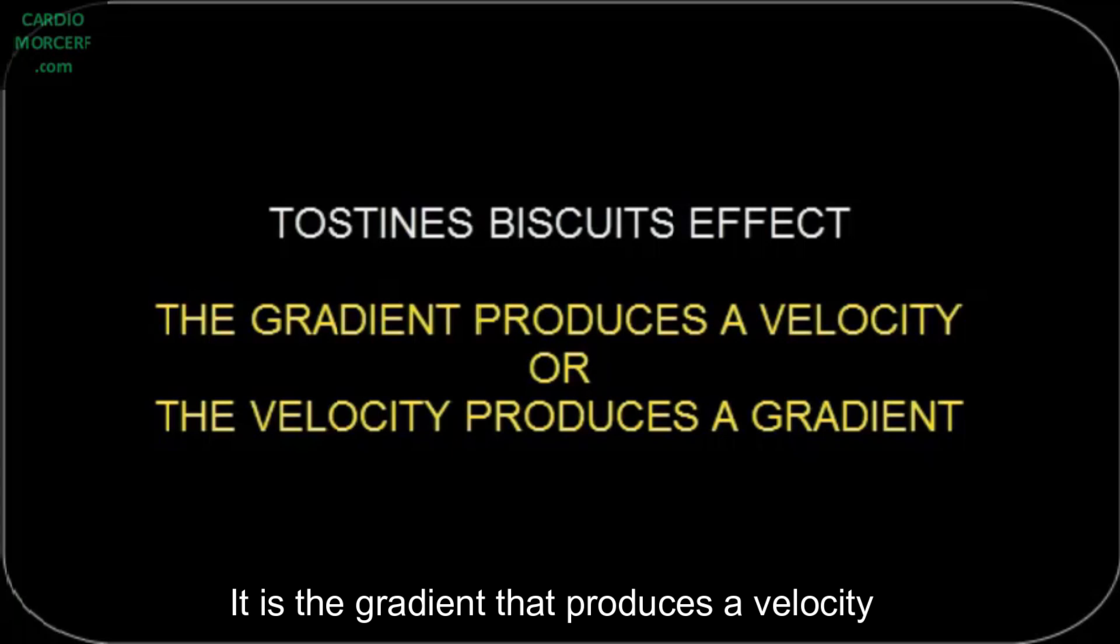In other words, it is the gradient that produces a velocity or is the velocity that produces a gradient. I believe that most of you will say that it is the gradient that produces a certain velocity and not the other way around. But here, too, this answer is wrong. It is a velocity of the fluid that produces a gradient.